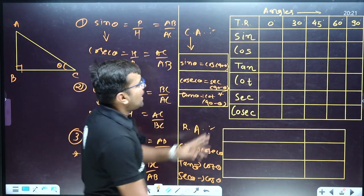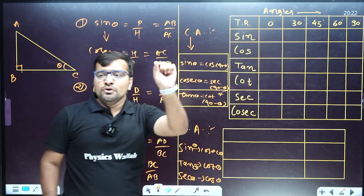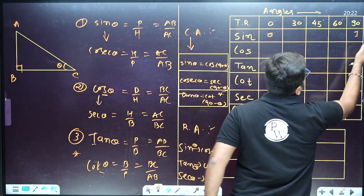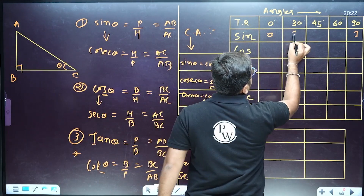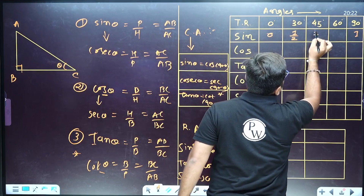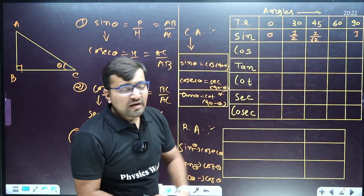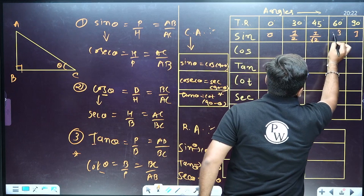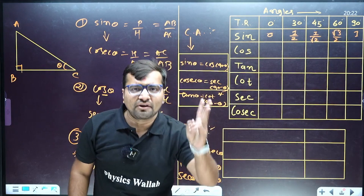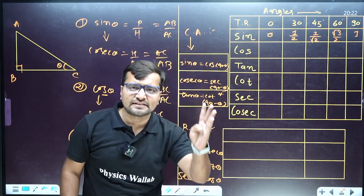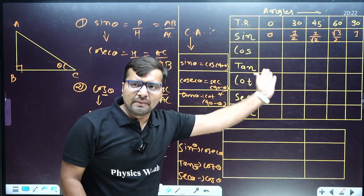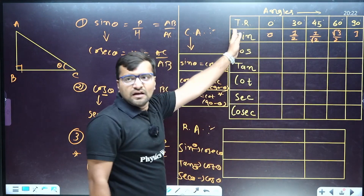Now let's discuss the trigonometry table — very important. How do you remember it? You only need to remember the values of sine. Sin 0° is 0, sin 90° is 1. Now, 0 plus 1 by 2 is just 1/2. Put a square root cap on both — so sin 30° is √1/2 which is 1/2, sin 45° is √2/2 which is 1/√2. Adding: 1 plus 2 is 3, so sin 60° is √3/2, and sin 90° is √1 which is 1.